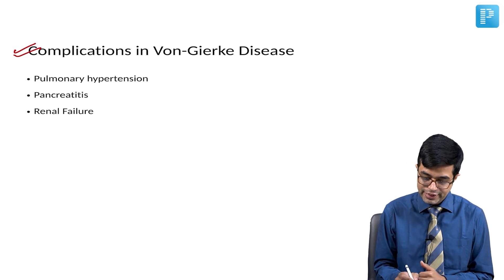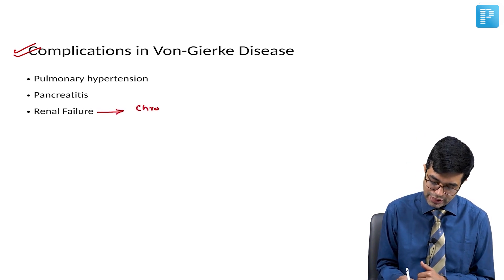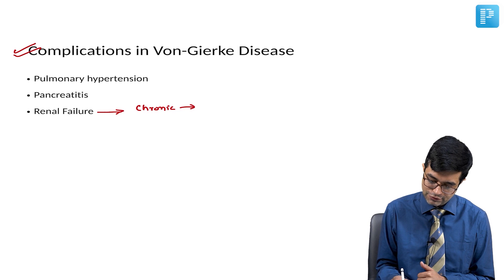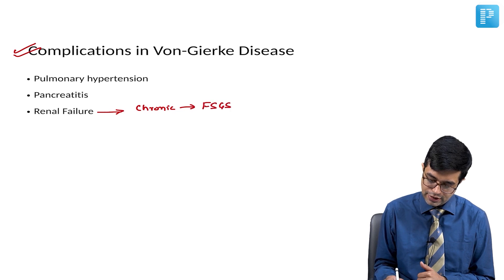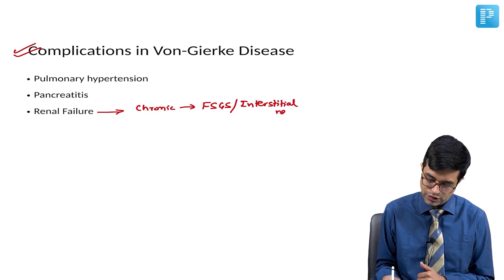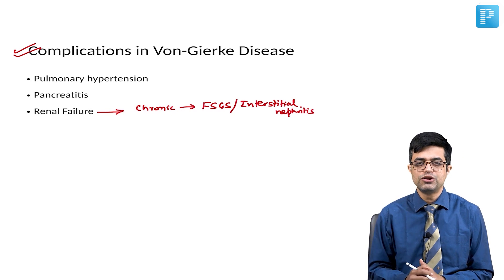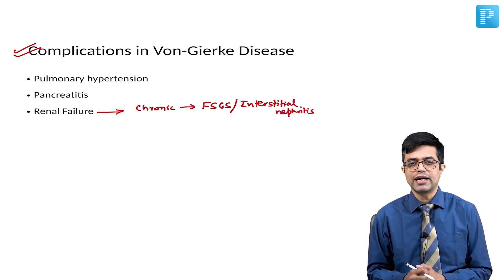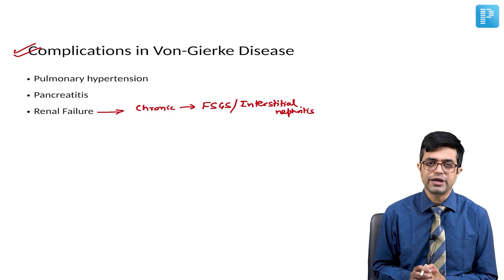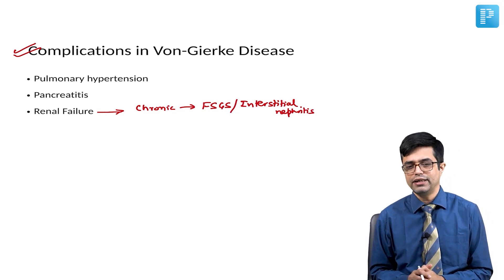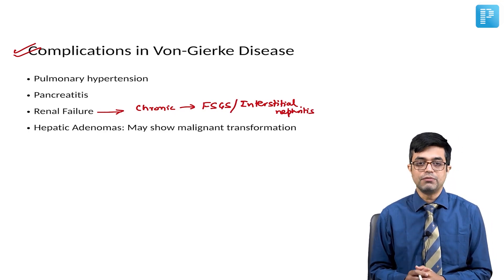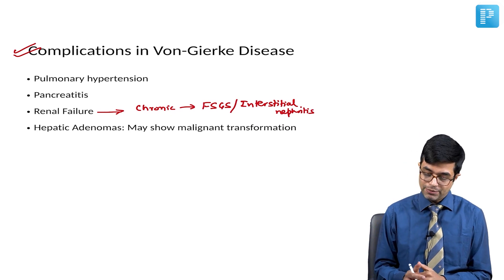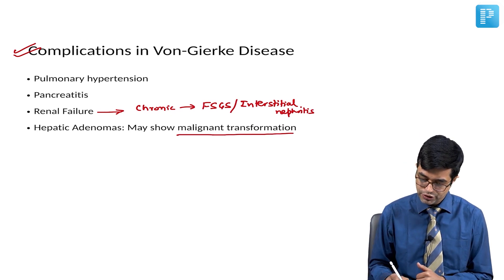Renal failure predominantly is of the chronic renal failure type, and features suggestive of FSGS and interstitial nephritis, that is tubular dysfunction, also tend to occur. They may have proteinuria, hematuria, and granular casts and progressive fall in GFR in untreated stages mainly in adulthood. And there may be hepatic adenomas. These hepatic adenomas may sometimes show malignant transformation into hepatocellular carcinomas.